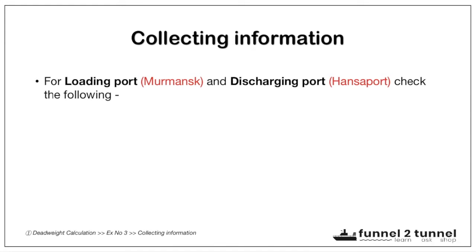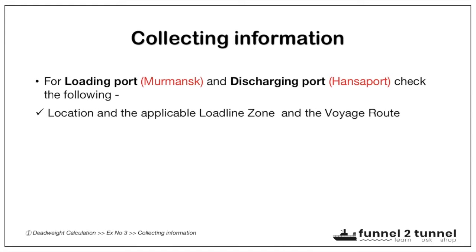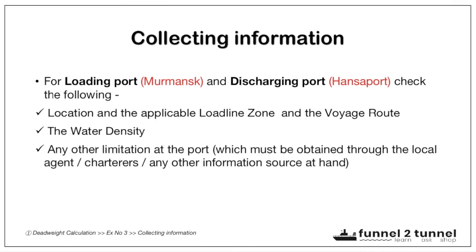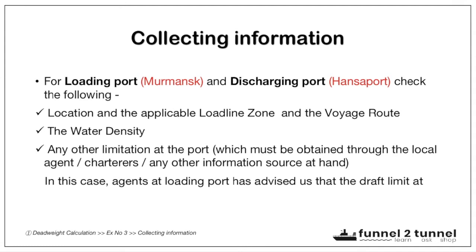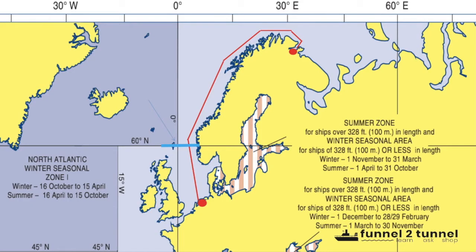For loading port Murmansk and discharging port Hansaport, we need to check: the location of the port and the applicable load line zone, the voyage route, the water density at both ports (already provided in the voyage instructions), and any other limitations at the port from the local agent or charterers. The agents at the loading port have already advised us that the draft limit at Murmansk is 12 meters. Going to the load line zone chart, Murmansk is in Russia at a high latitude port in the Arctic Circle and is a tidal port.